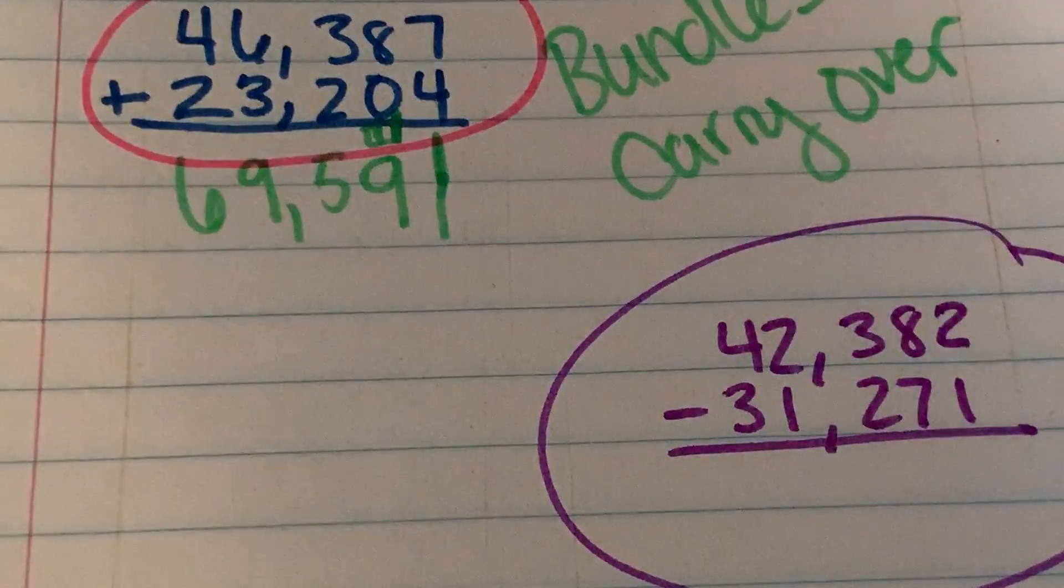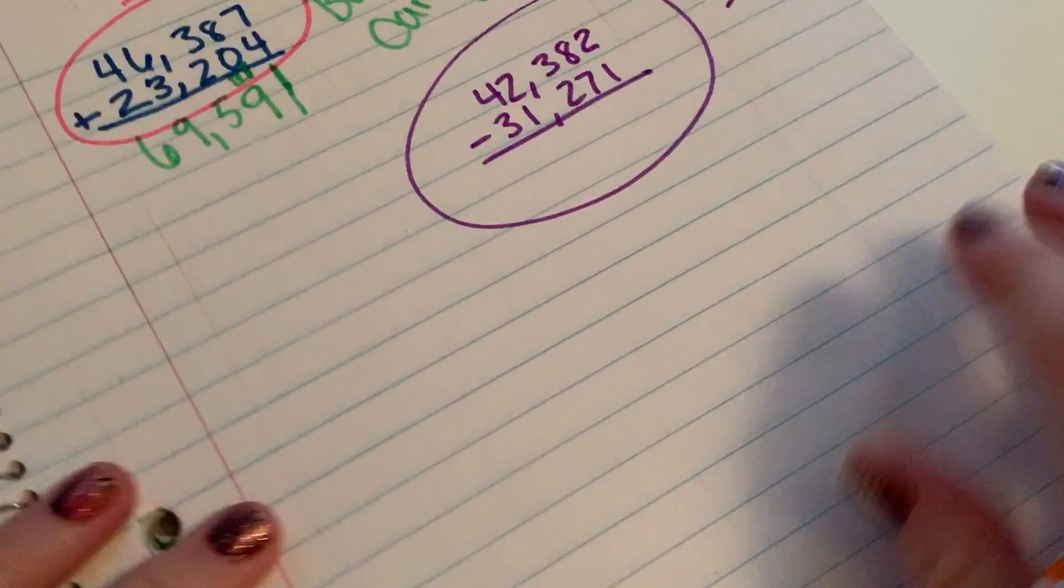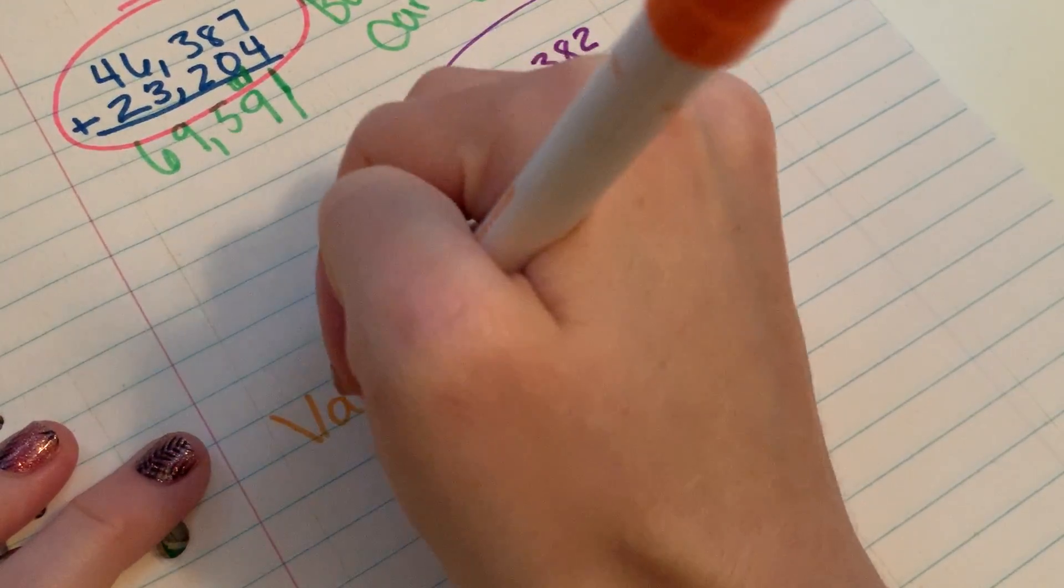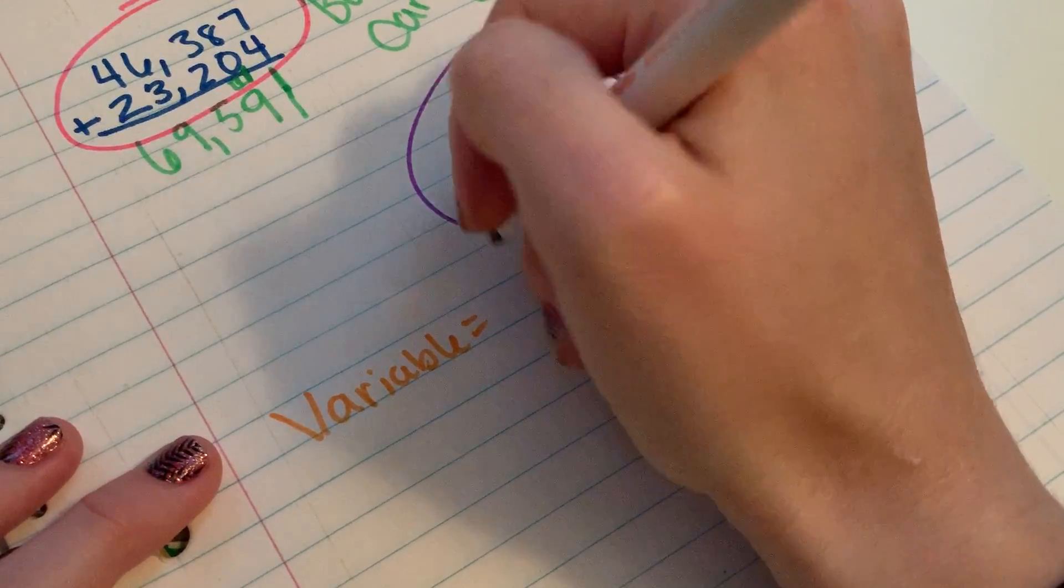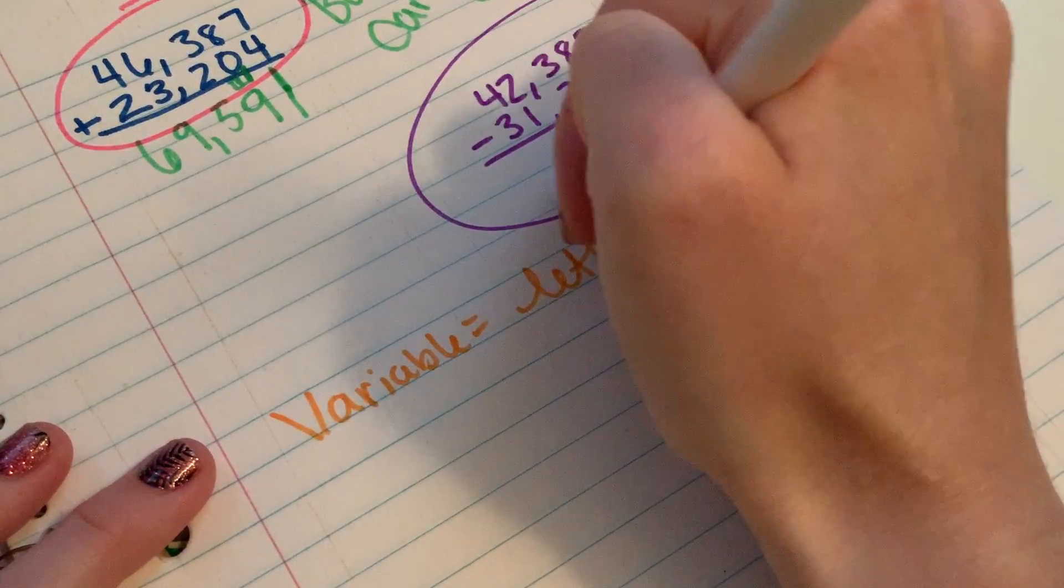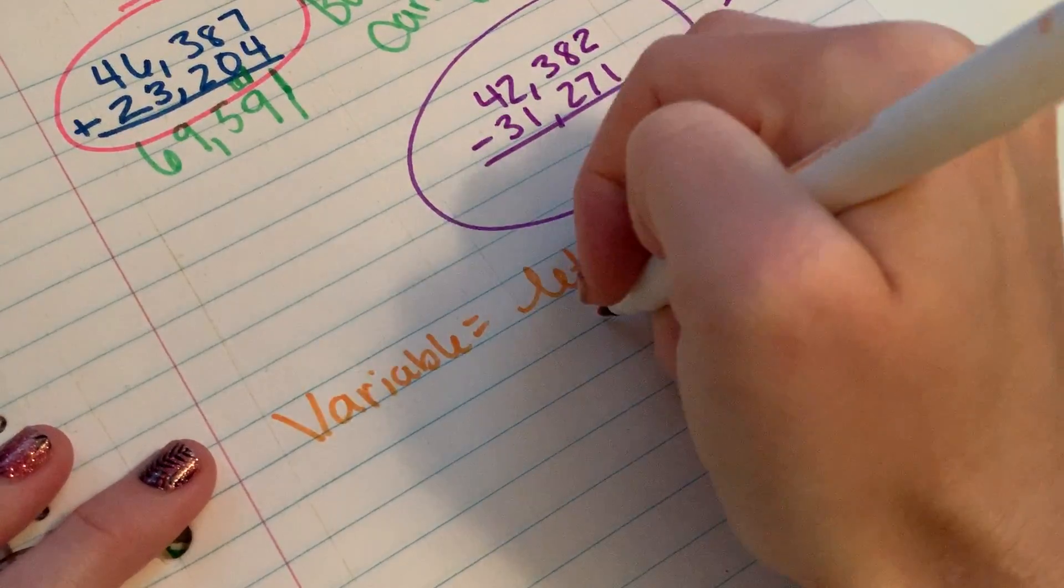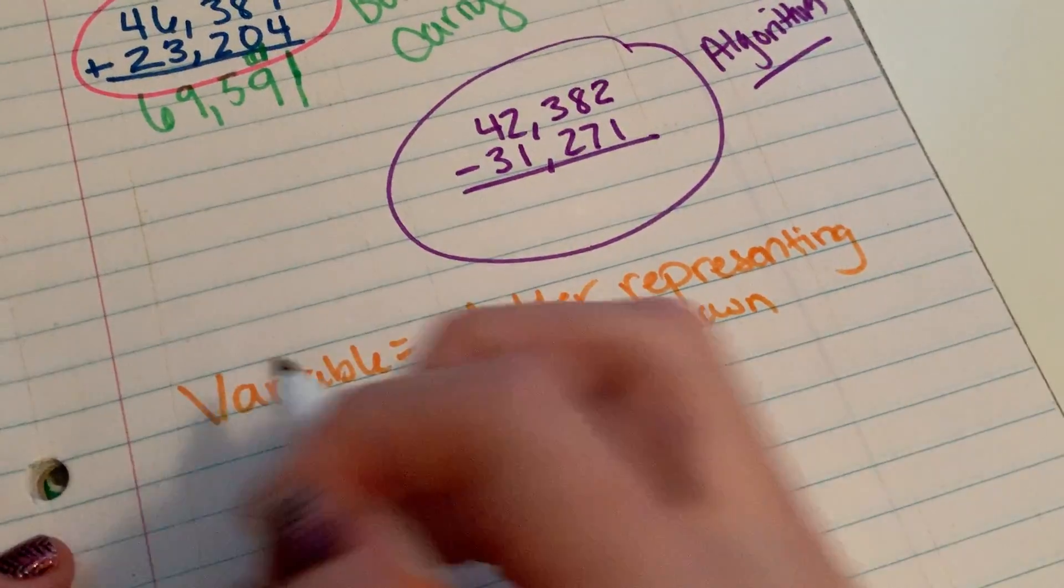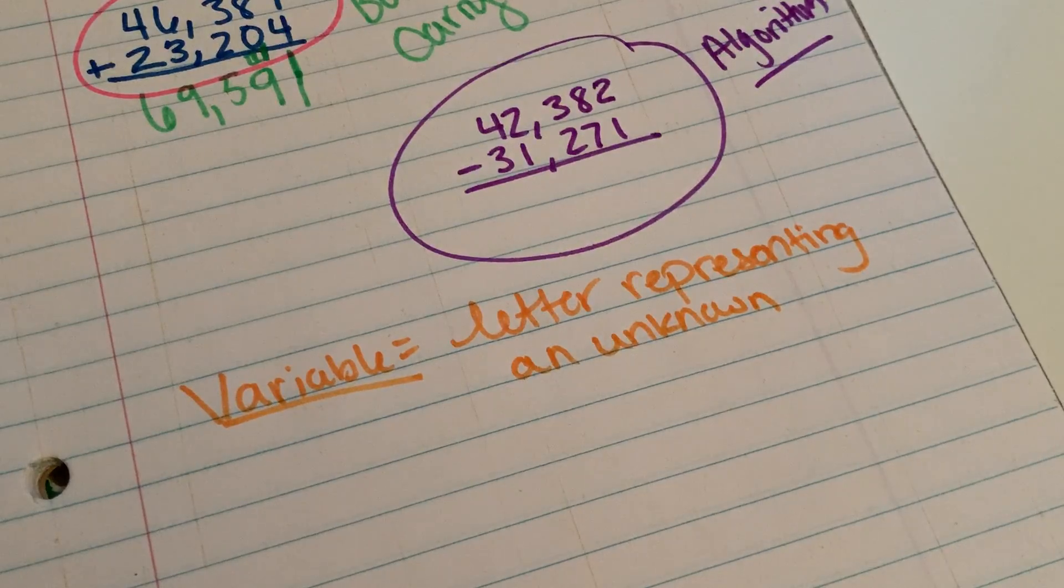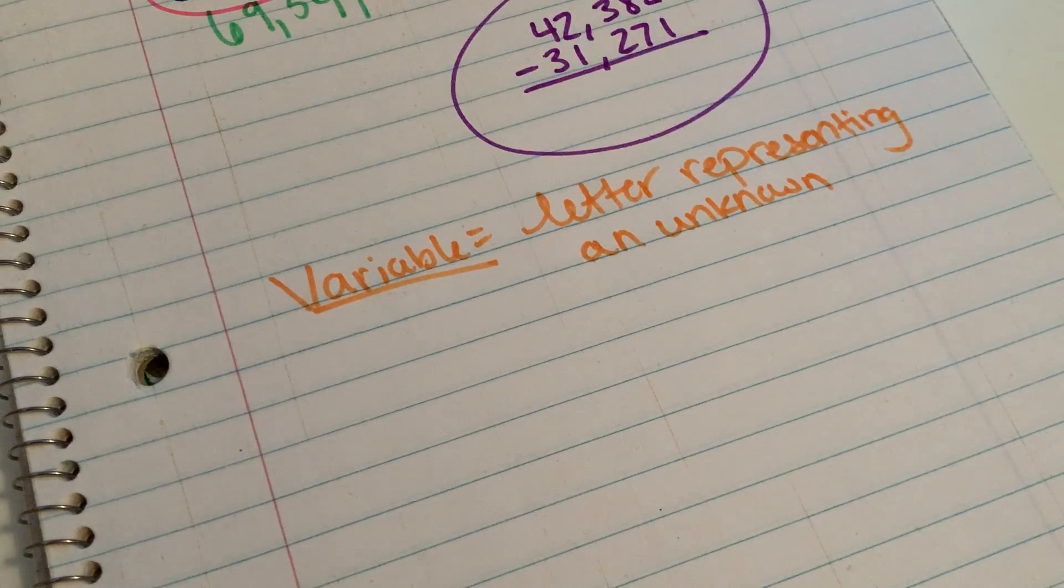The next thing I want to point out is the word variable. And they bring this word up pretty early in the lessons. So a variable, they define a variable as a letter representing an unknown. So this is a letter representing an unknown.